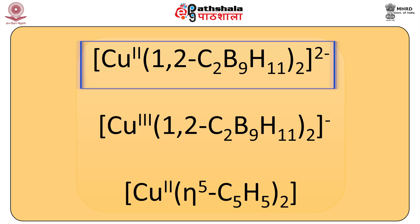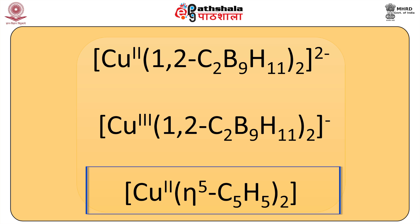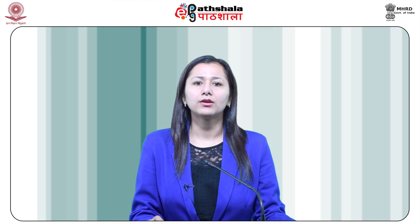Metallocarburanes tend to stabilize higher oxidation states of later transition metals. For example, Cu(C2B9H11)2(2-) and Cu(C2B9H11)2(2-) ions are known, whereas cuprocene, Cu(eta5-C5H5)2, is not. Iron(3) and nickel(4) carburane derivatives are extremely stable.